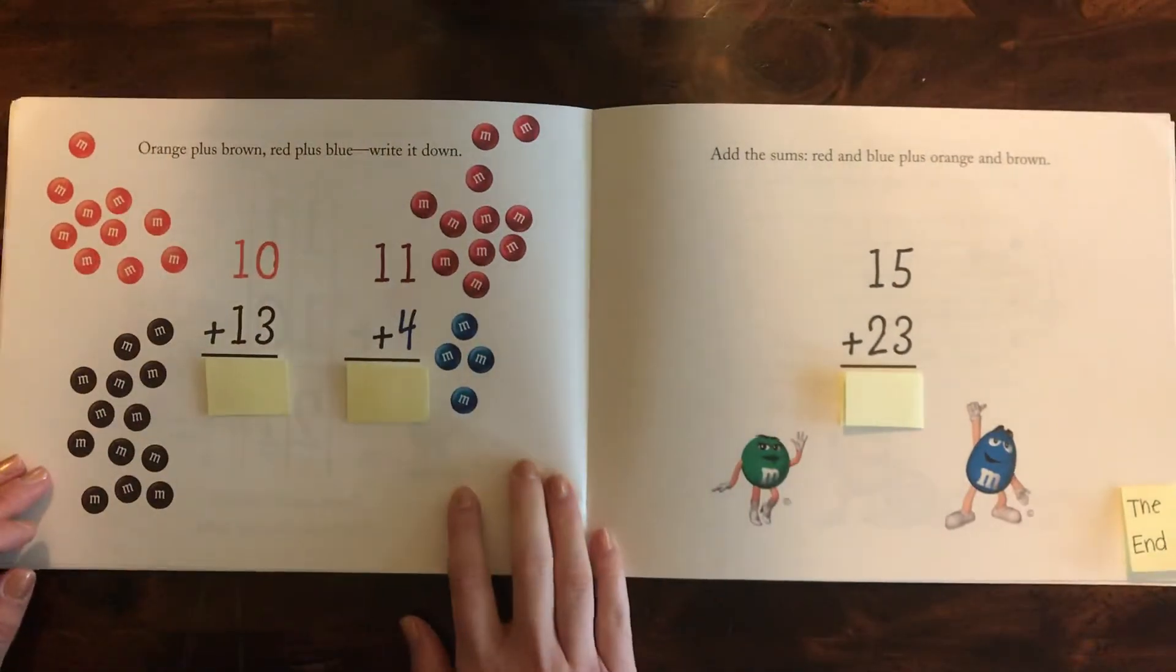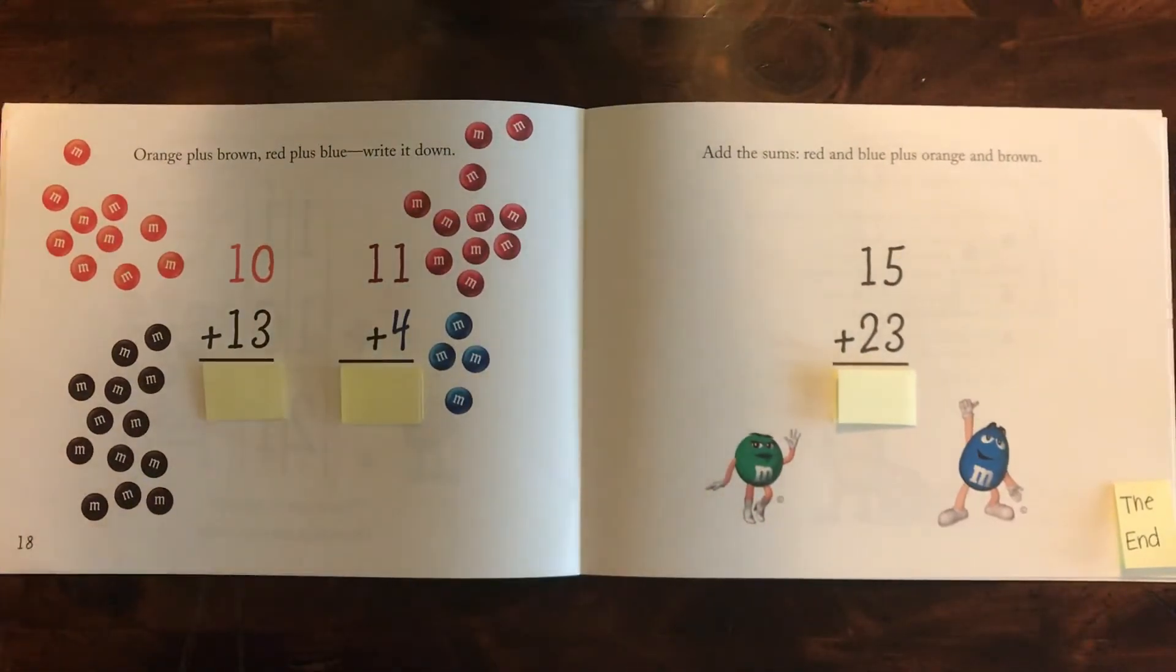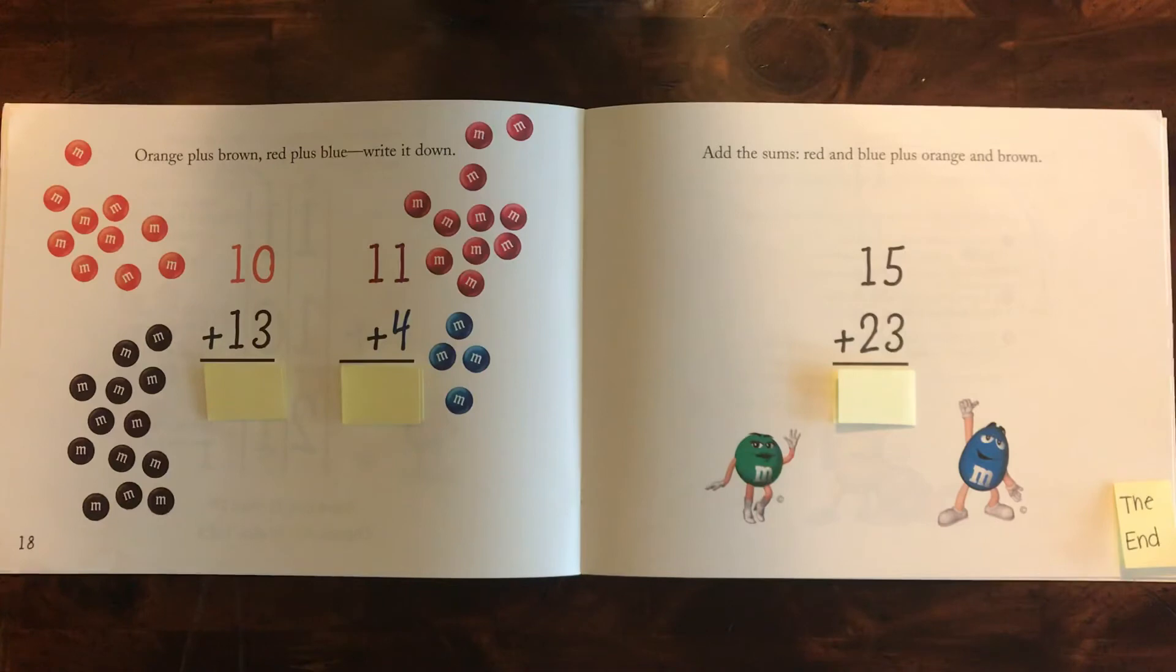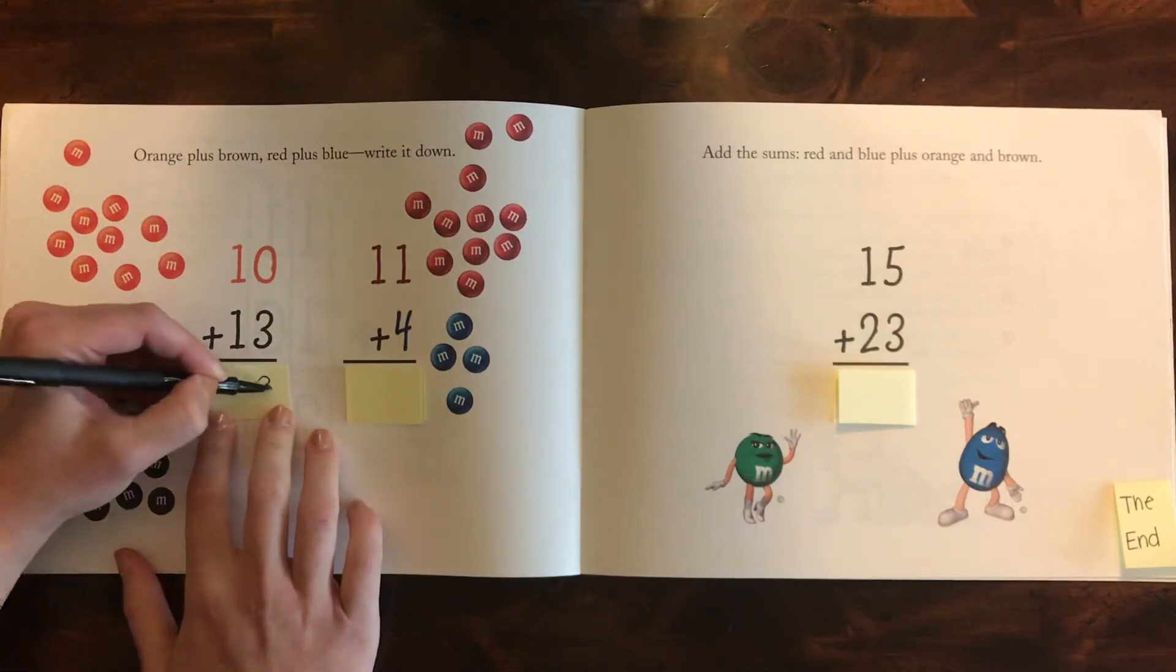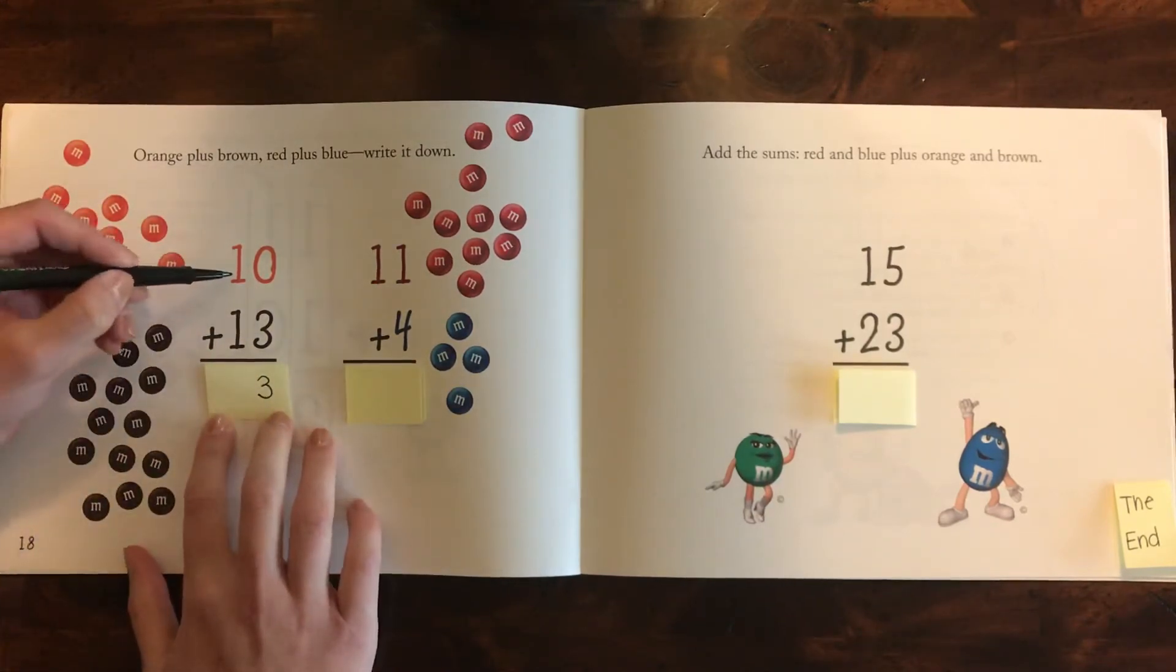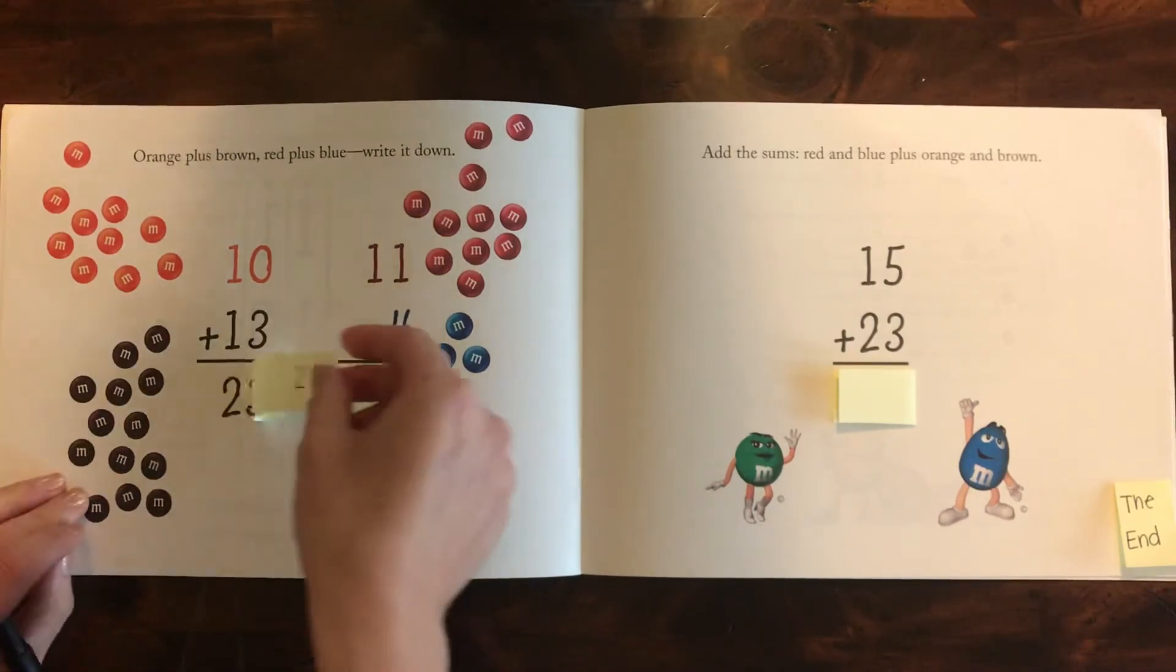Now you can write this on your piece of paper and let's see if you can get these ones. Orange plus brown, red plus blue. Write it down. We have 10 plus 13. First, we do the ones column. Zero plus three is three. Then we do the tens column. One plus one is two. So I got 23. Let's see if we're right.